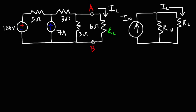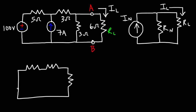Let's begin by calculating the Norton's resistance. The Norton's resistance is basically the same as the Thevenin's resistance — we find it the same way. We're going to replace the independent voltage source with a short circuit, and the independent current source will be replaced with an open circuit. We're also going to disconnect the load resistor. So we need to find the equivalent resistance across points A and B.